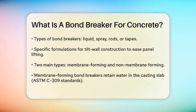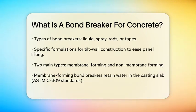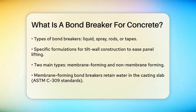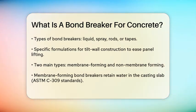There are two main types of bond breakers: membrane forming and non-membrane forming. Membrane forming bond breakers, like those following ASTM C309 standards, help retain water in the casting slab. Non-membrane forming bond breakers can be reactive or non-reactive, with reactive ones forming a soap-like layer on the concrete surface and non-reactive ones creating a waterproof surface.